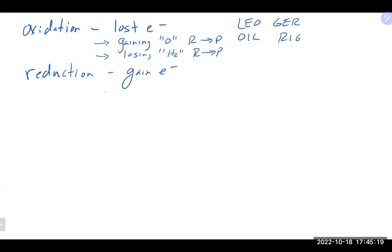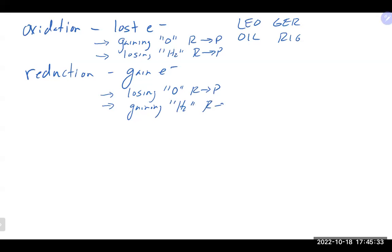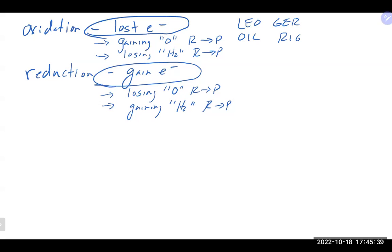Reduction has the opposite definitions: losing oxygen going from reactants to products, and gaining H₂ going from reactants to products. In general chemistry, we primarily use electrons as our definition of oxidation and reduction, but these other definitions can occasionally pop up.